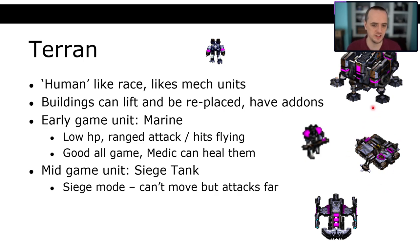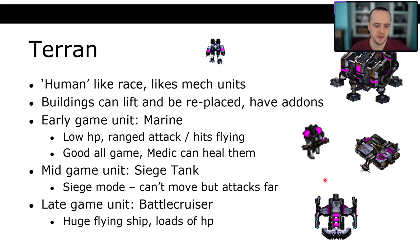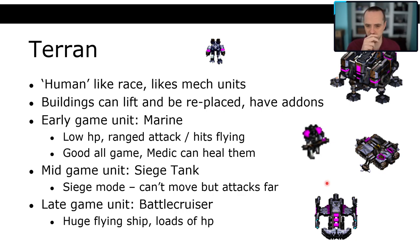A mid-game unit could be the Siege Tank, which can walk and fire normally, but once you research siege mode it locks in place and shoots really, really far — that's a race-defining capability. In the very late game, Terrans have huge flying spaceships called Battlecruisers with tons of hit points, tons of damage, and a Yamato cannon that fires from far away. That's the flavor of the Terrans.